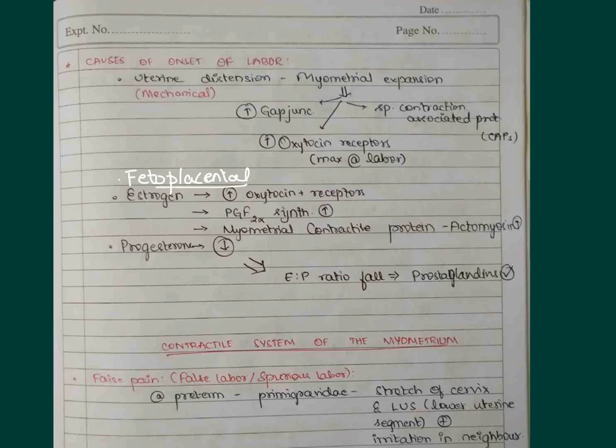There is one more important aspect which is the fetoplacental contribution. The fetus will get the cascade of events to activate the fetal hypothalamic-pituitary-adrenal axis, which in turn will activate the placenta to produce hormones like estrogen and prostaglandins. These hormones will further cause the contraction of the uterus.